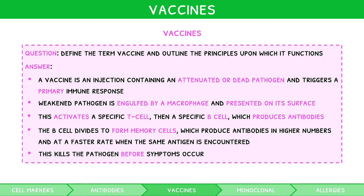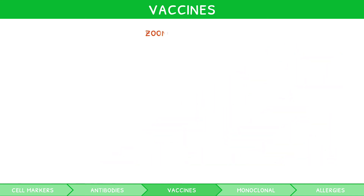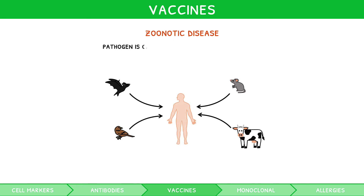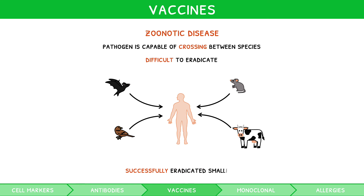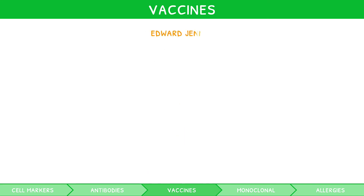Vaccines play a role in the prevention of deadly disease, but more often they are used to prevent the spread of zoonotic disease. These are diseases where the causative pathogen is capable of crossing between species, making them difficult to eradicate as they have many hosts. Nevertheless, we have had success in eradicating one named smallpox, a deadly and highly contagious disease caused by the variola virus. For your exam, you are expected to recall this accomplishment thanks to the work by Edward Jenner.